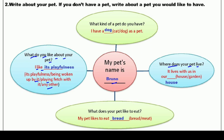پھر: Where does your pet live? آپ کا pet کہاں پر رہتا ہے؟ تو جیسے یہاں پر لکھا ہے: it lives with us in our house or garden — وہ آپ کے ساتھ house میں رہتا ہے یا garden میں۔ میں نے for example 'house' لکھ دیا۔ اور پھر last question ہے: What does your pet like to eat? میرے pet کو bread کھانا پسند ہے — آپ meat بھی لکھ سکتے ہیں یا جو بھی اس کو کھانا پسند ہو۔